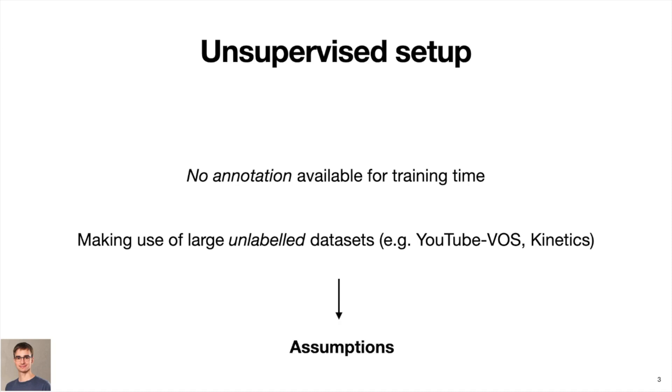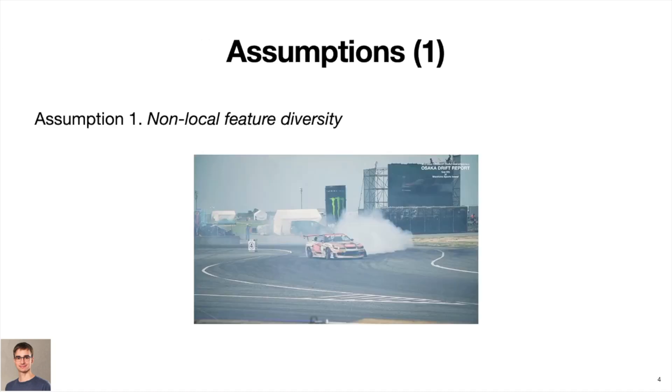For a start, we need to make some assumptions about the desired properties of the feature representations that we want to learn. First, we assume non-local feature diversity. This means that the semantic feature representations should be spatially distinguishable.